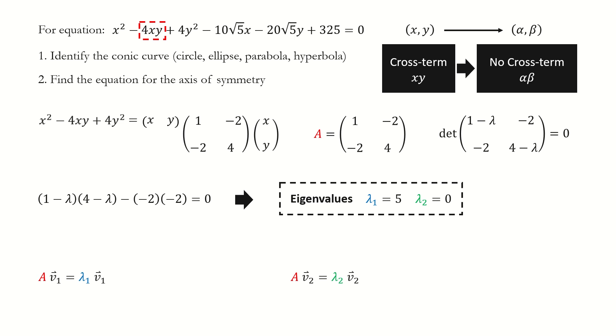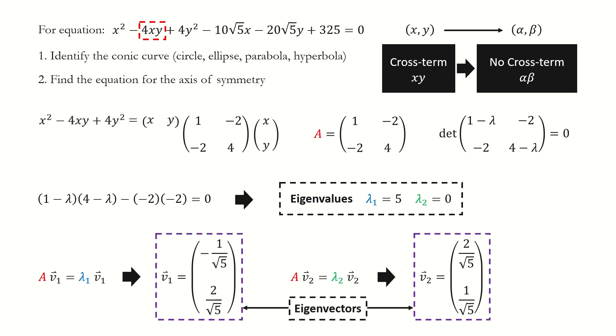Next, we use the two eigenvalues to solve eigenvectors. So we use the two eigenvectors. From these two equations, we got two eigenvectors.